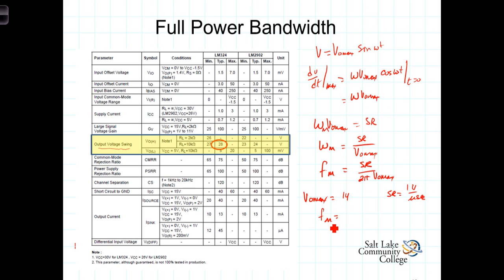So the full power bandwidth in cycles per second, or hertz, is going to be 1×10^6, which is the slew rate, divided by 2π, divided by Voutmax, which is 14. And for these numbers, it turns out that the full power bandwidth is 11.37 kilohertz.